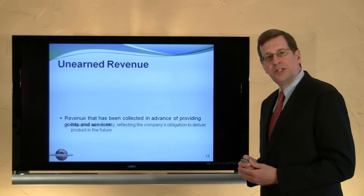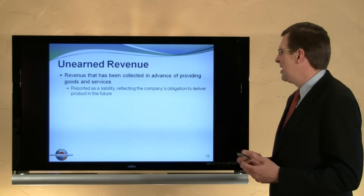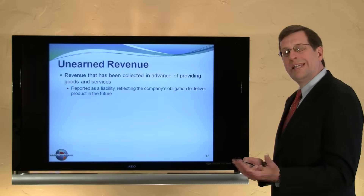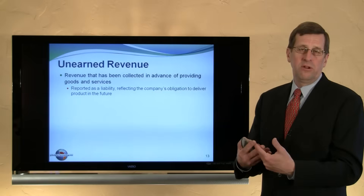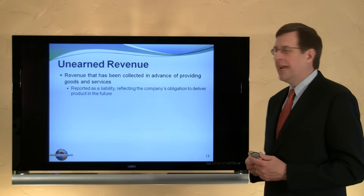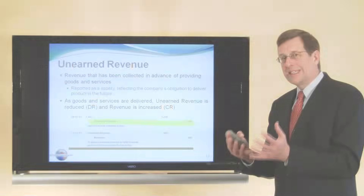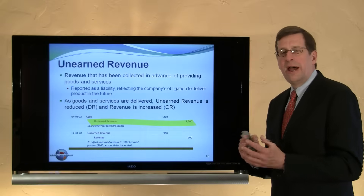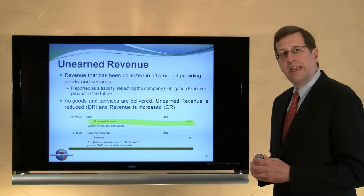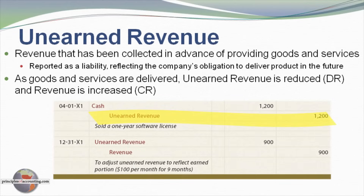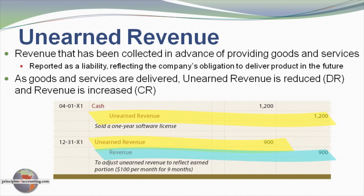Turning our attention to yet another item that requires adjustment: unearned revenue. Unearned revenue is revenue that has been collected in advance for providing goods and services in the future. Until we provide those goods or services, we have an obligation to either return the money or provide the service, so we reflect that obligation as a liability. For example, we sold a one-year software license for $1,200 on April 1 of Year 1 — crediting unearned revenue of $1,200, which is the liability account. After nine months, our adjusting entry at December 31 reduces the unearned revenue account and credits revenue for $900, moving that amount into revenue as it is earned.